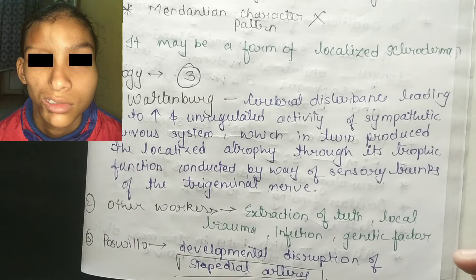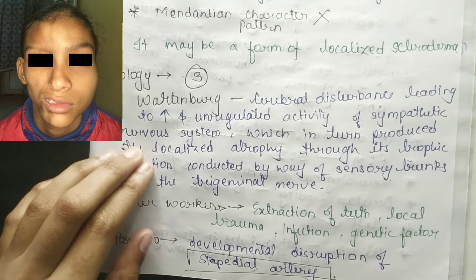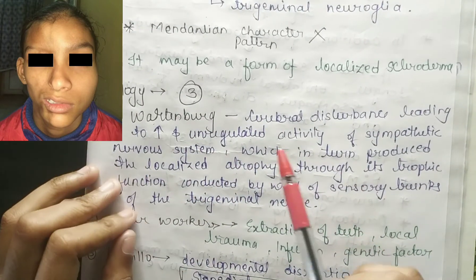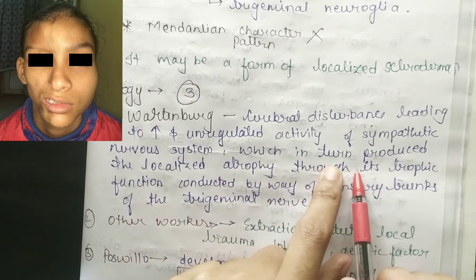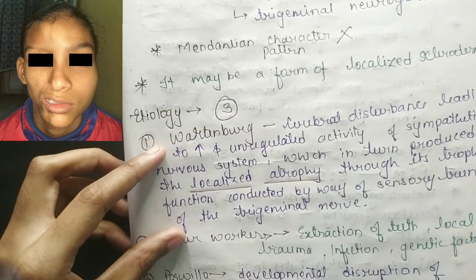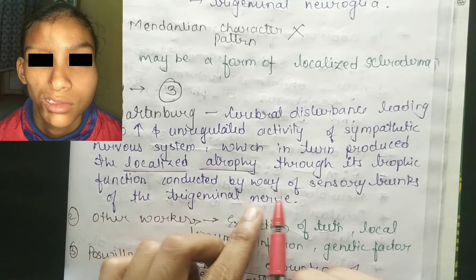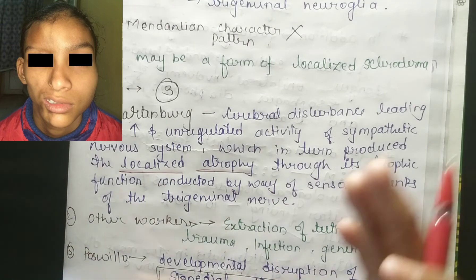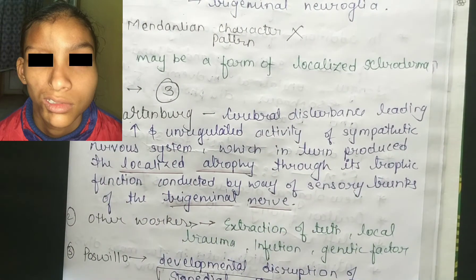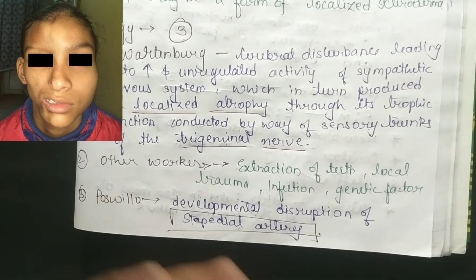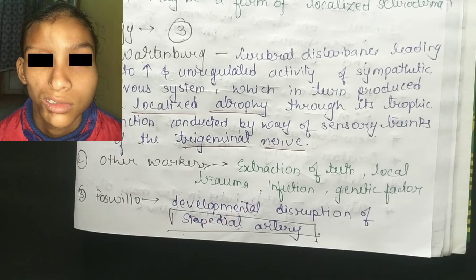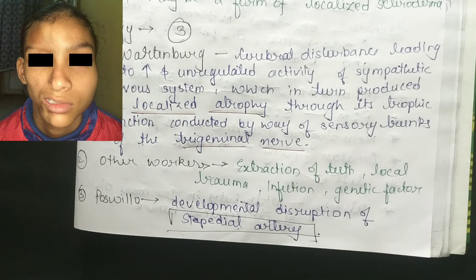Now looking at the etiology, there are three theories. Wartenberg's theory relates to common causes such as infection, local trauma, and genetic factors — similar to conditions like amelogenesis imperfecta and other genetic disturbances.